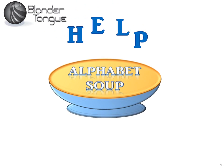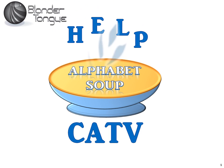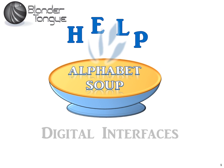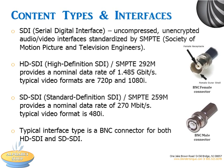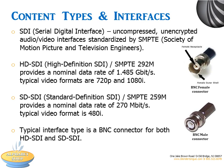Blondertongue is happy to help with the alphabet soup that exists in cable television technology. Today's topic will be Digital Interfaces. There are two types of SDI, or Serial Digital Interfaces: HD-SDI and SD-SDI.